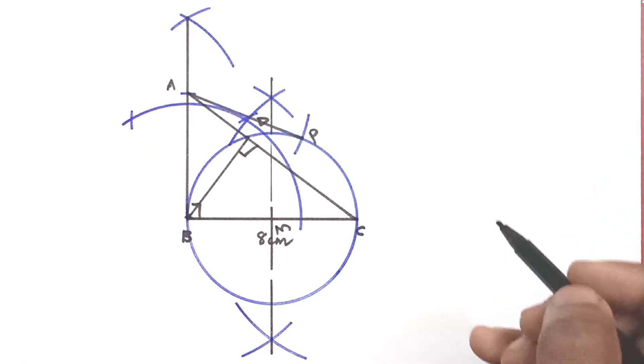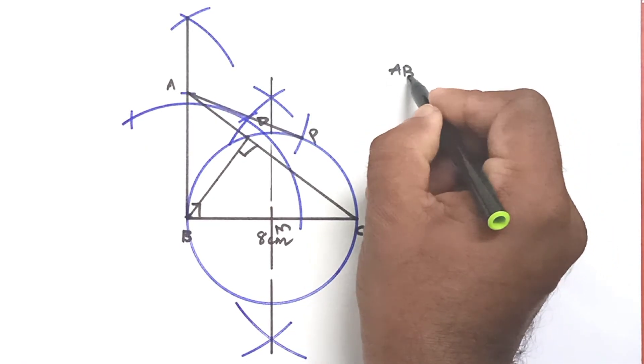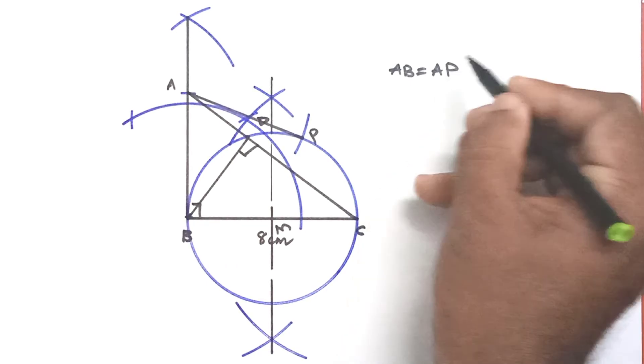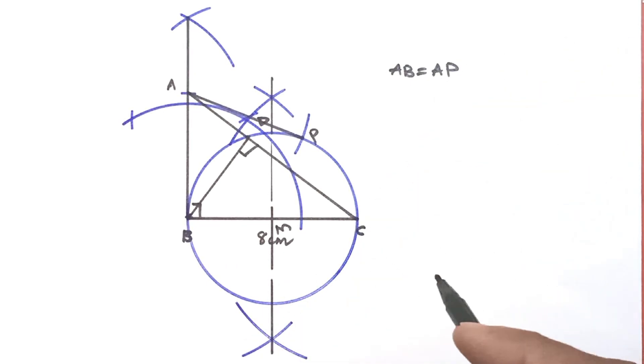That arc will intersect the circle at P. We can join AP. AB is equal to AP. So AB and AP are the required tangents from the point A.